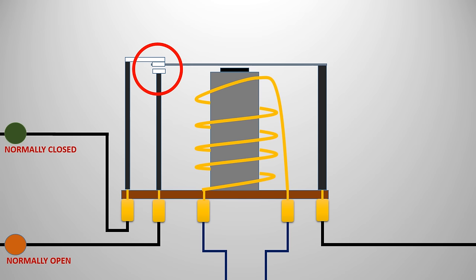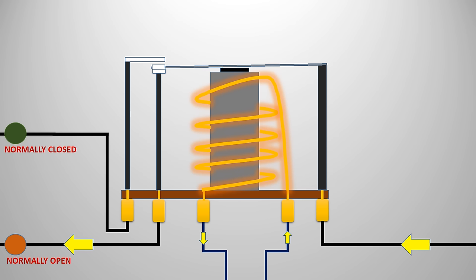In the rest position, the normally closed contacts allow current to flow from the source to the circuit. When the electromagnet is energized, it attracts the armature, breaking the current to the normally closed contacts and closing the contacts for the normally open side of the relay.